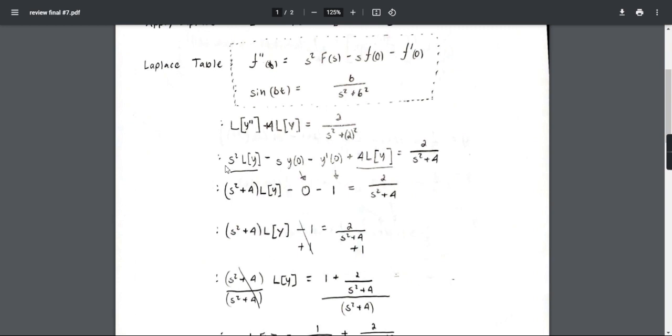So as you can tell right here, this s converts into this right here, plus 4L{y} equals 2 over s squared plus 4.